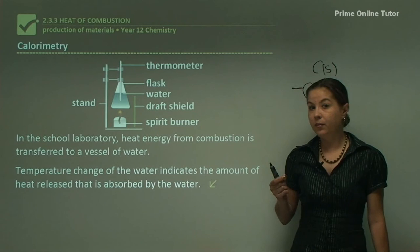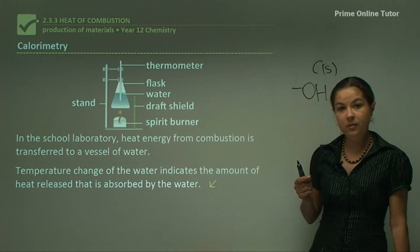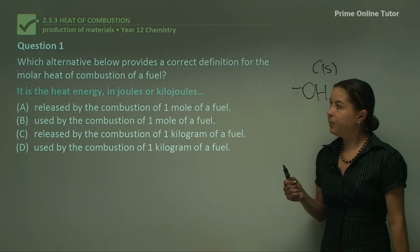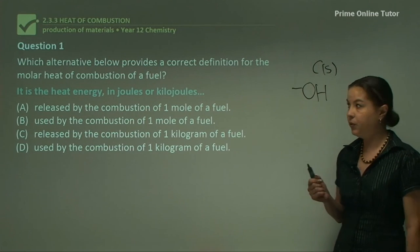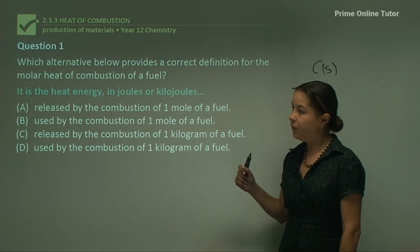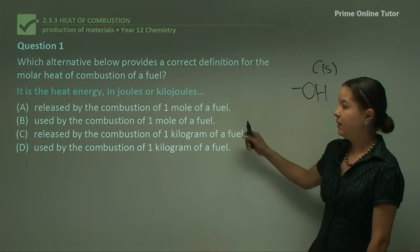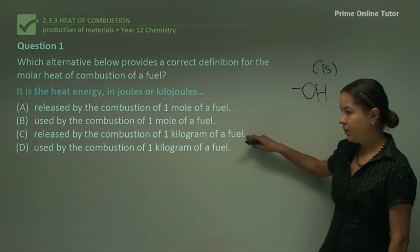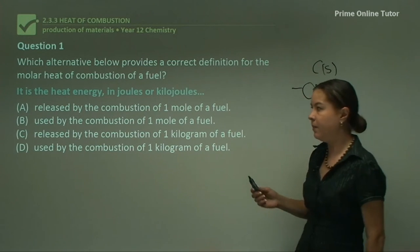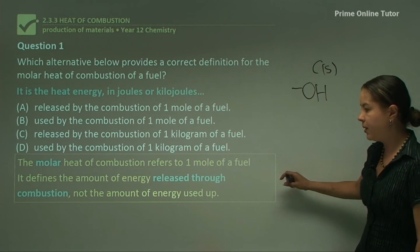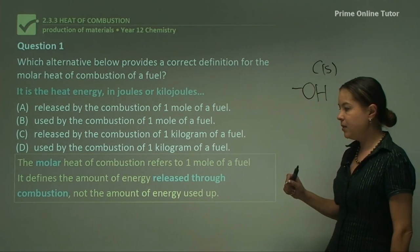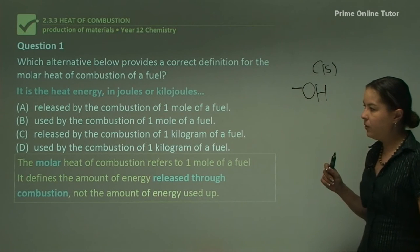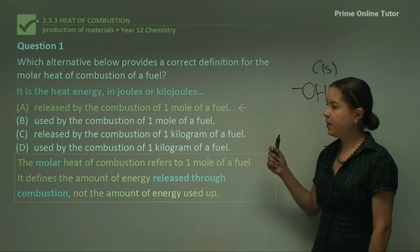That finishes the theory part about the heat of combustion of alkanols. Now let's look at some questions. Question one: which alternative provides a correct definition for the molar heat of combustion of a fuel? The options are: heat energy released by combustion of one mole, used by combustion of one mole, released by one kilogram, or used by one kilogram. The molar heat of combustion refers to one mole of fuel and defines the energy released — so the answer is: it's the heat energy released by the combustion of one mole of fuel.